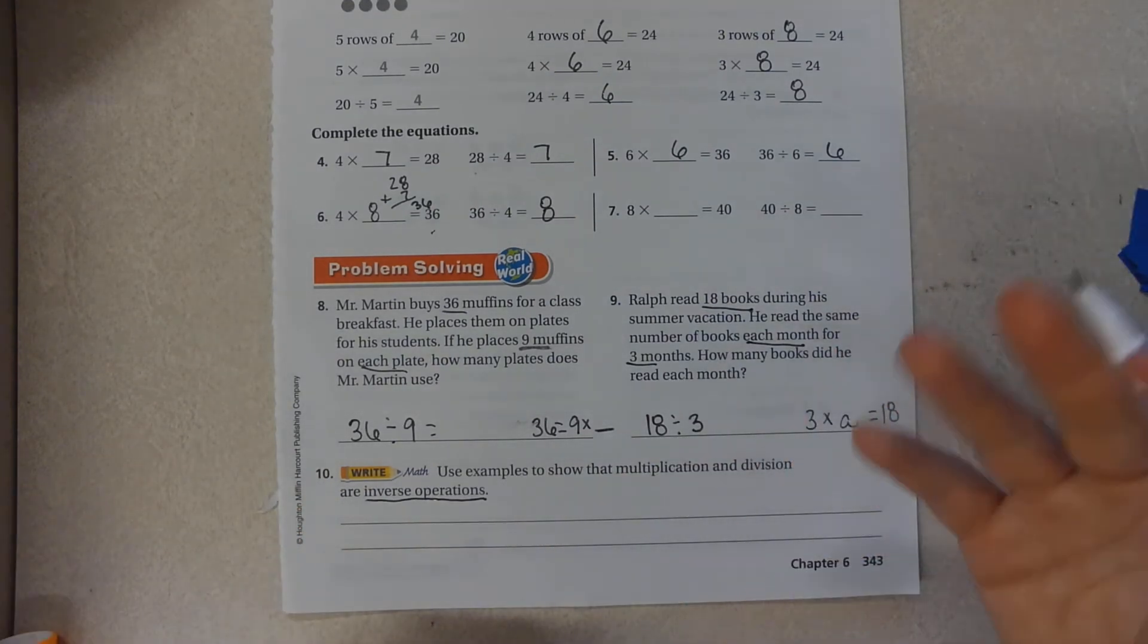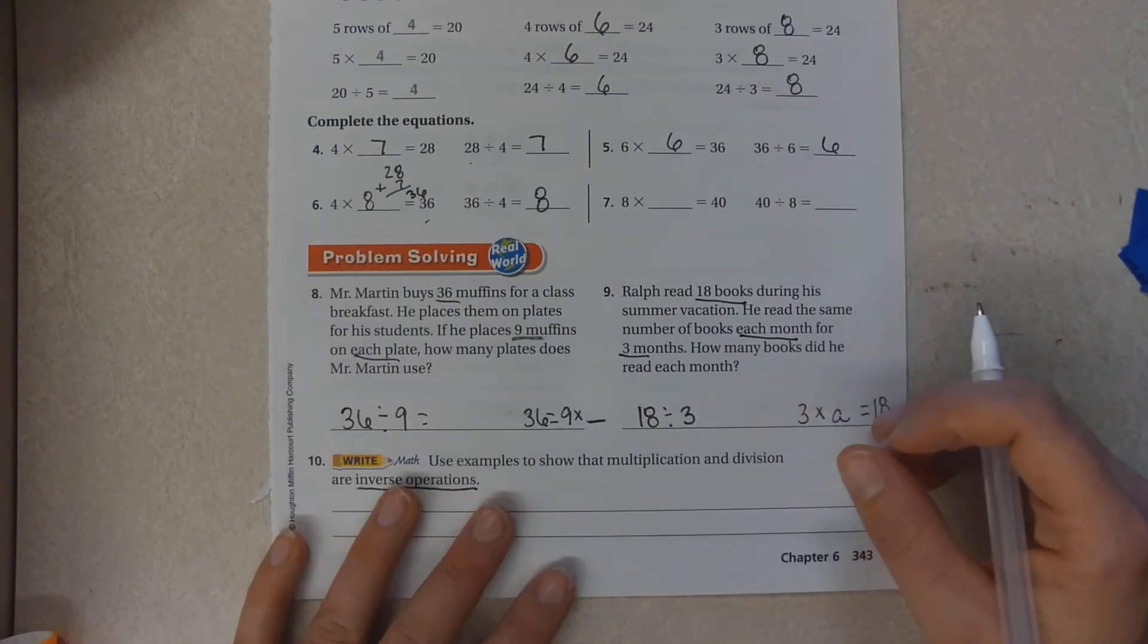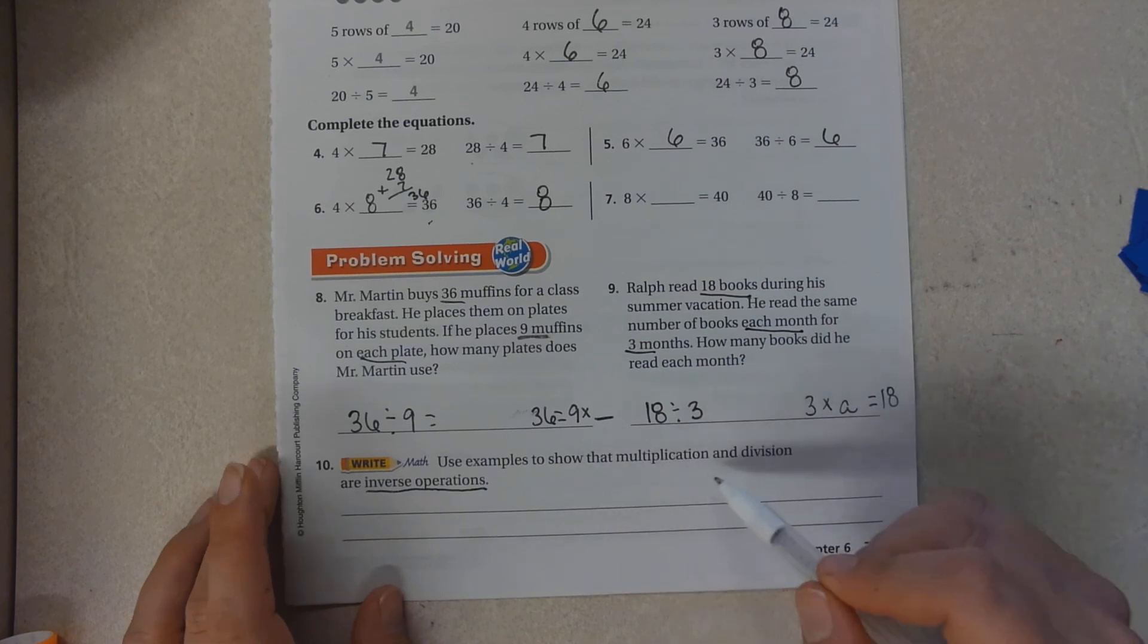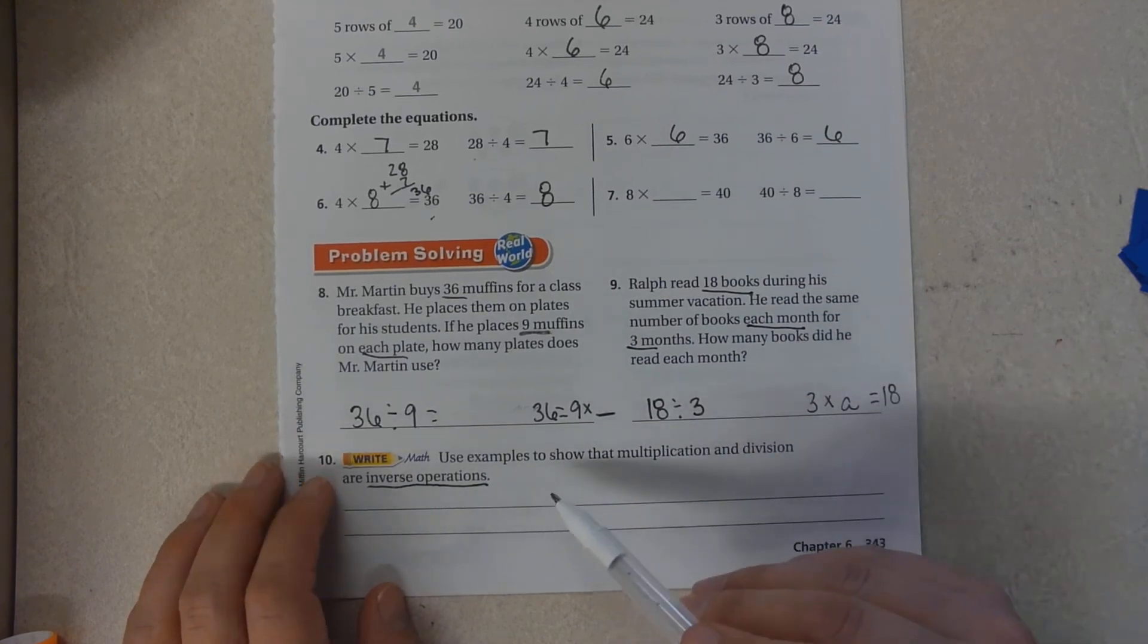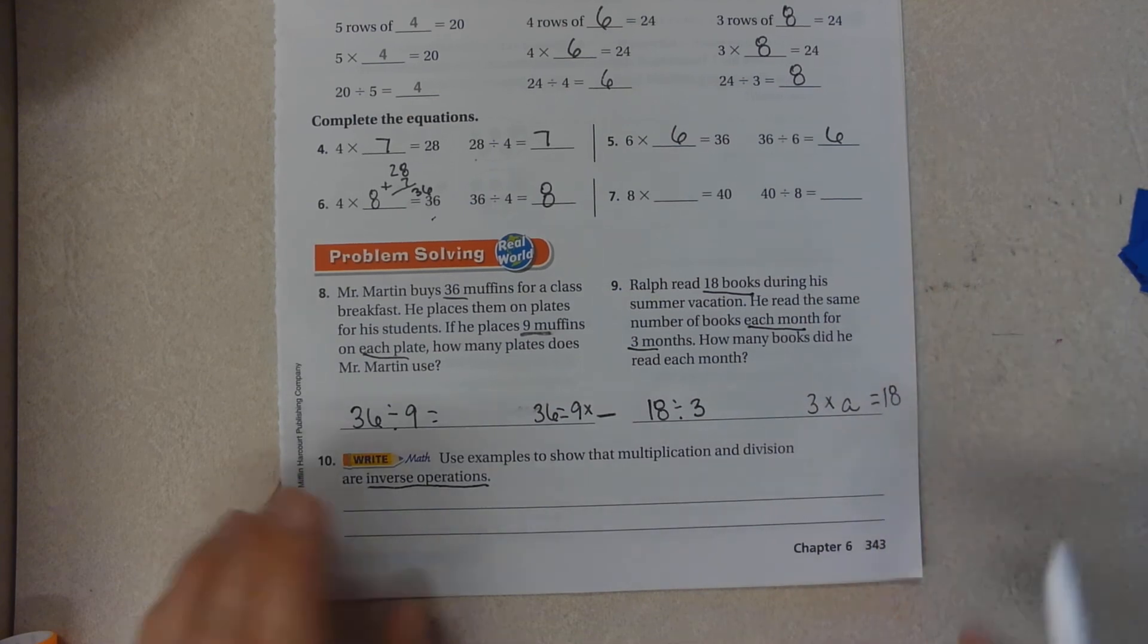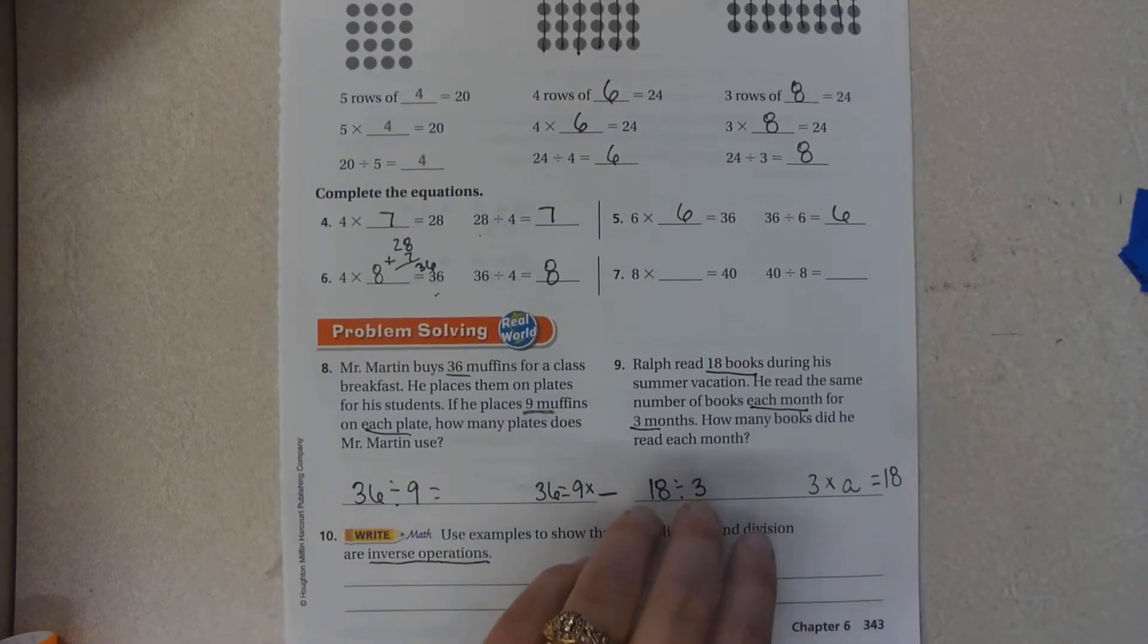The opposite of addition is subtraction. The opposite of multiplication is division. So use words and possibly pictures to illustrate this. And that concludes lesson 6.7.